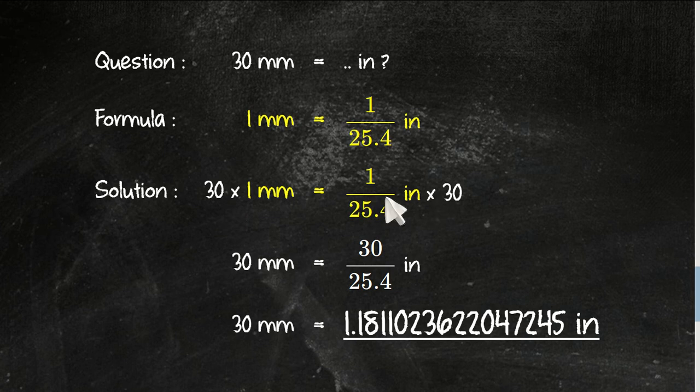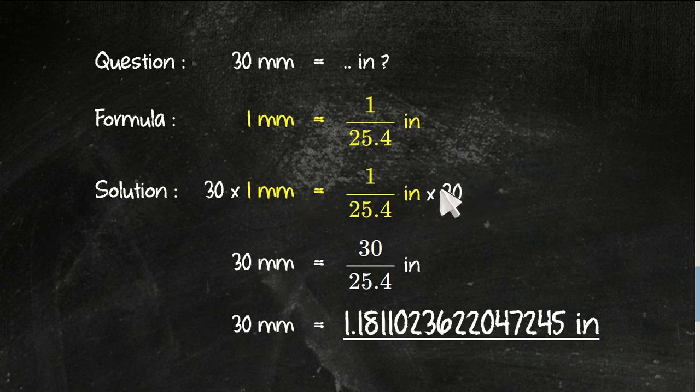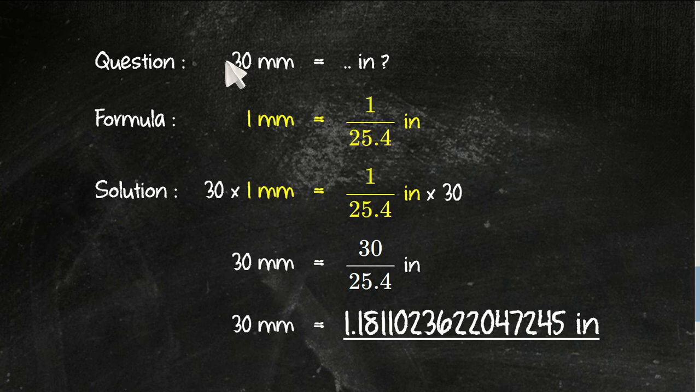The reason why we multiply both numbers with 30 is because the only number we have from the question is 30. To make an equation, you need to put 30 here and 30 here as well.